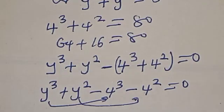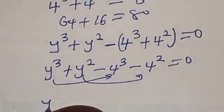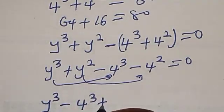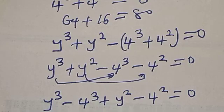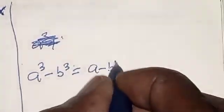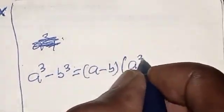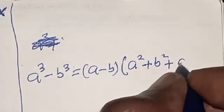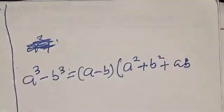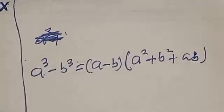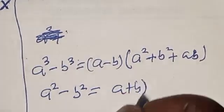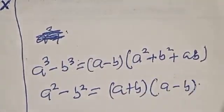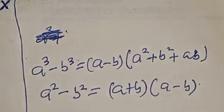By rearranging, we get y cubed minus 4 cubed, plus y squared minus 4 squared, equals zero. Now remember the identity: a cubed minus b cubed equals (a minus b)(a squared plus b squared plus ab). Also, a squared minus b squared equals (a plus b)(a minus b). In this case our a is y and our b is 4.